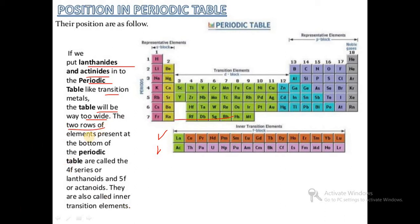So the two rows of elements present at the bottom of the periodic table are called 4f series or lanthanides and 5f series or actinides. They are also called inner transition elements. This is about the position in the periodic table.